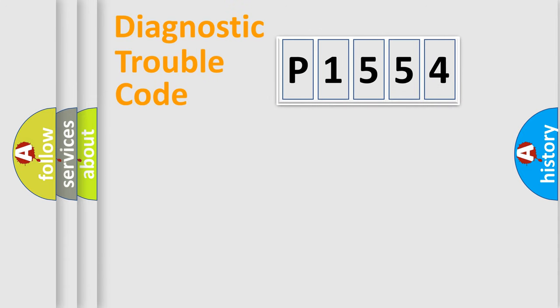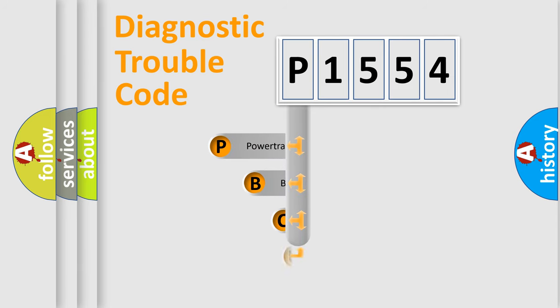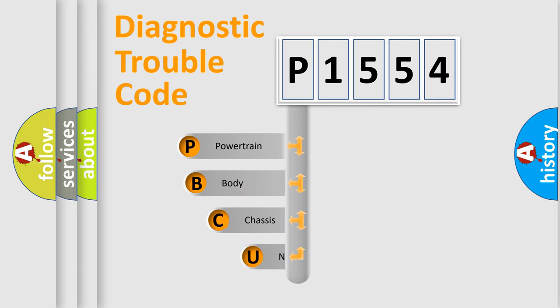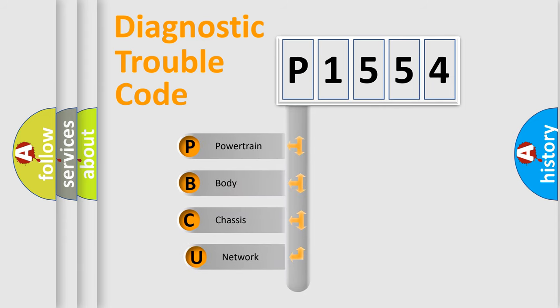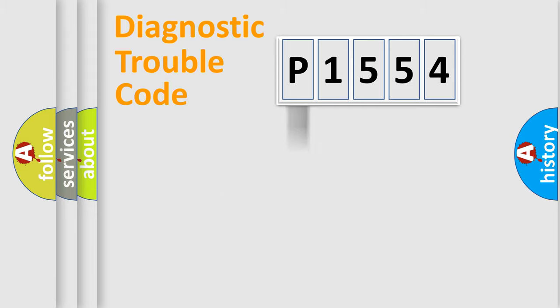Let's do this. First, let's look at the history of diagnostic fault code composition according to the OBD2 protocol, which is unified for all automakers since 2000. We divide the electric system of an automobile into four basic units: Powertrain, body, chassis, and network.